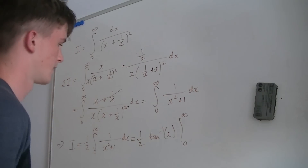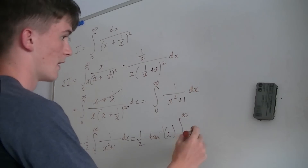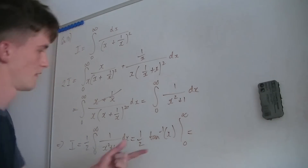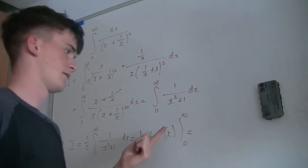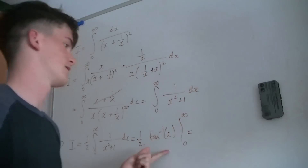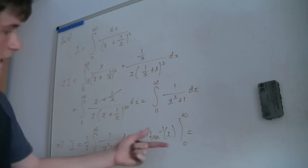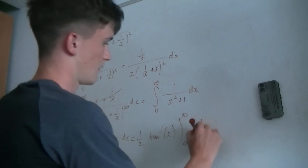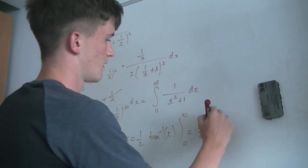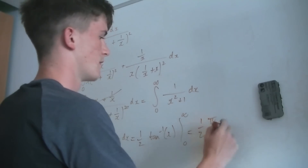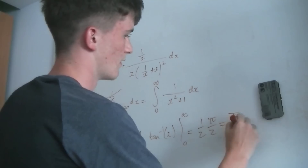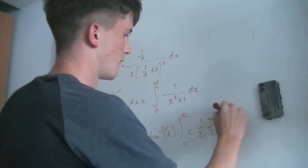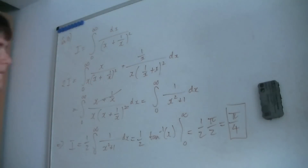This integral evaluates to inverse tangent, evaluated from 0 to infinity. Inverse tangent of infinity is pi over 2, and inverse tangent of 0 is 0. So we get one half times pi over 2, which is just pi over 4.